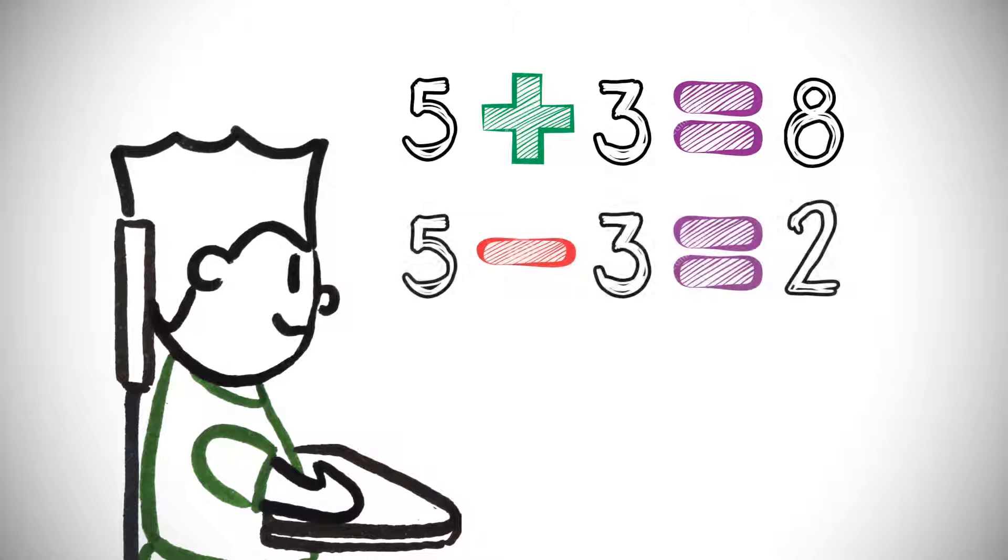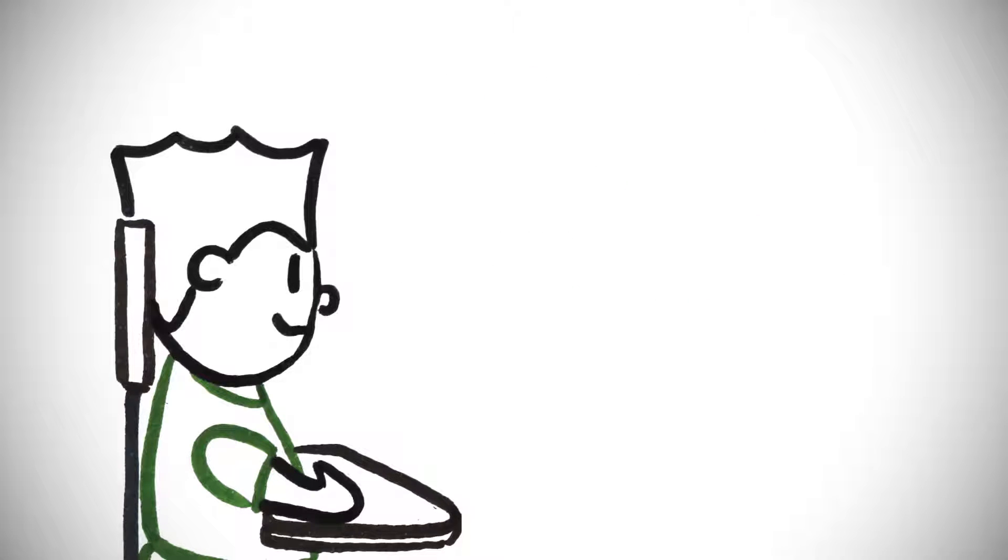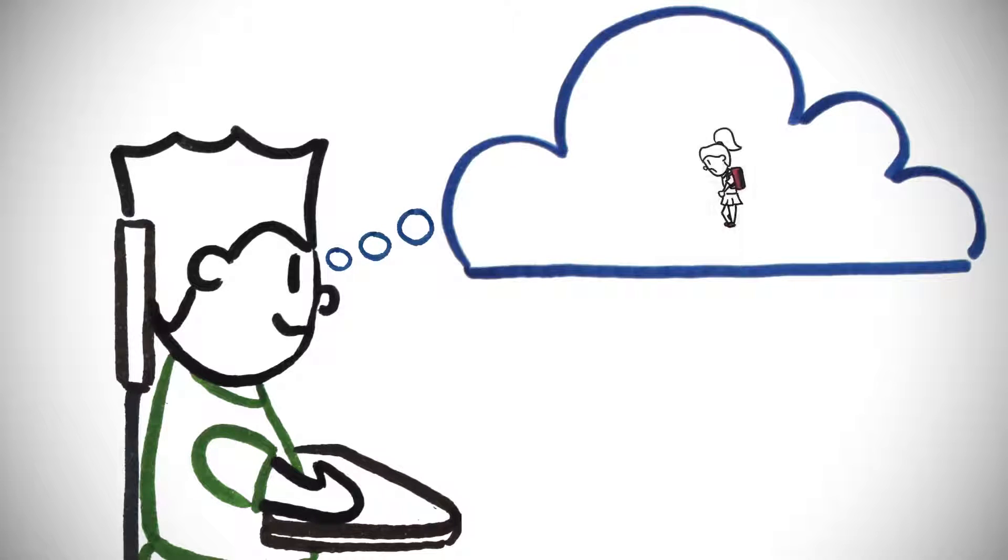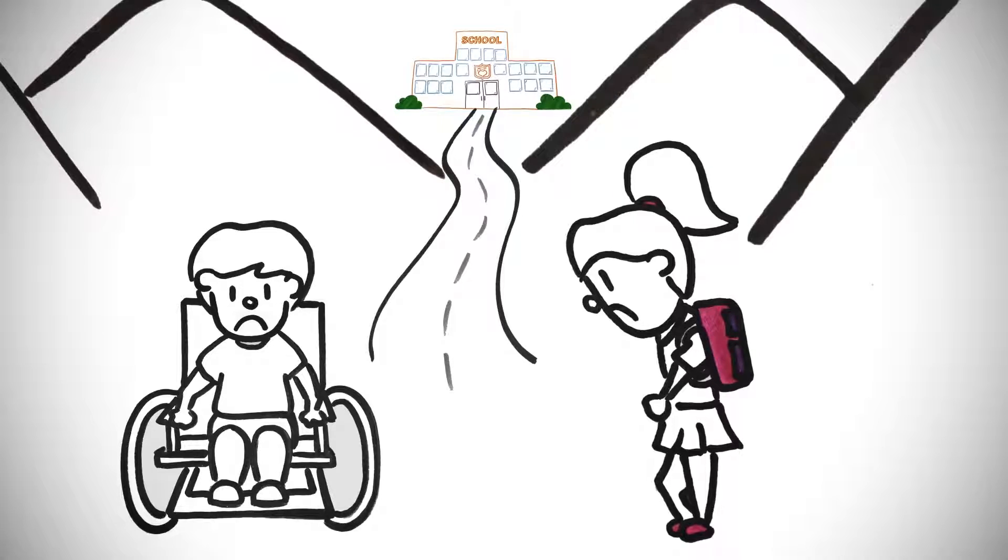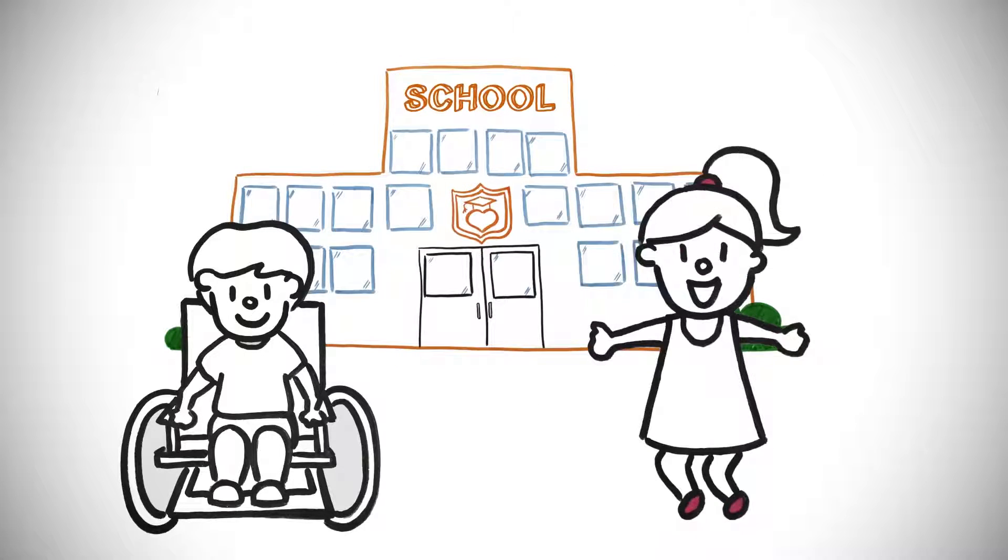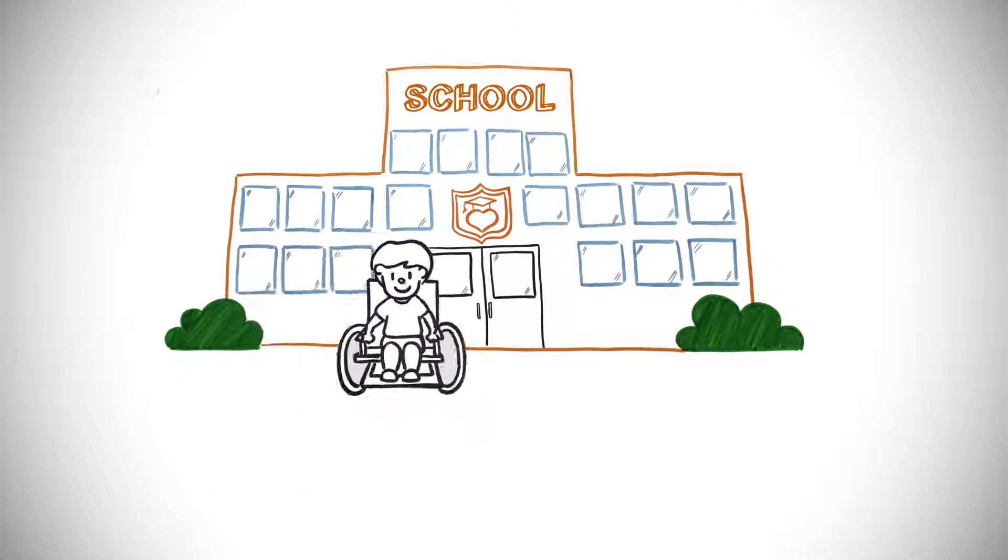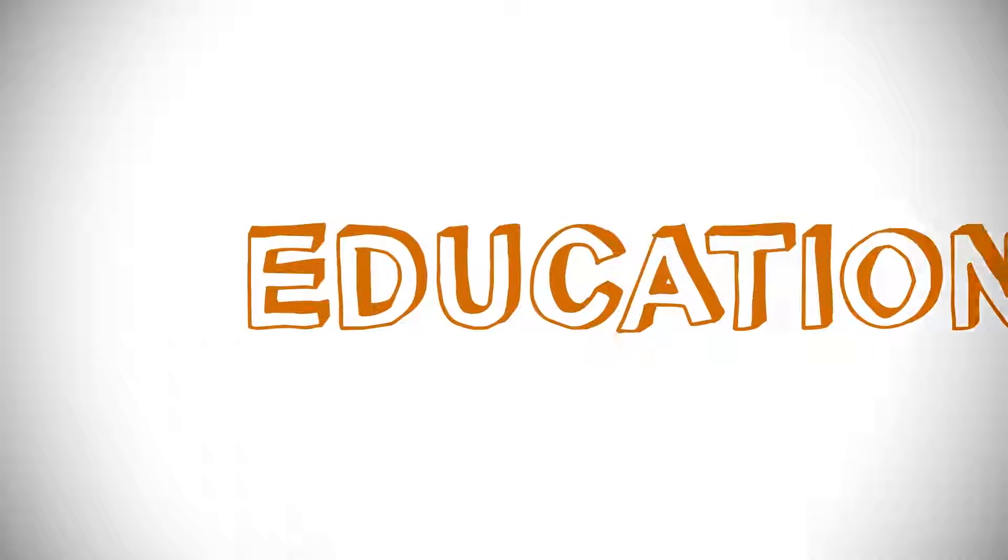Sometimes it is because they are girls or because they have a disability or because they live really far away. It is a right for every child to get to go to school and to learn when they are there. That is why education is another goal that our leaders have set.